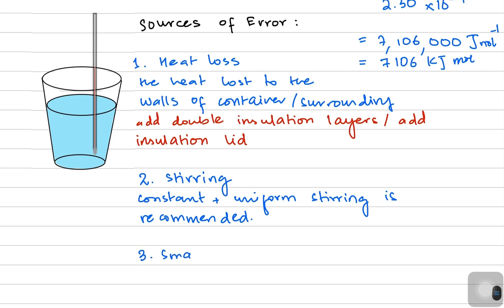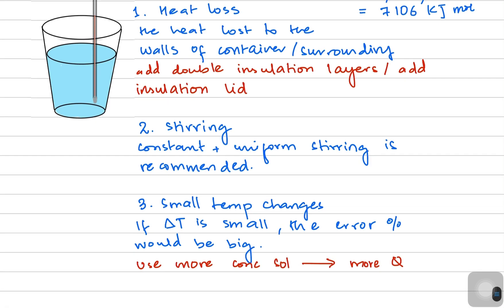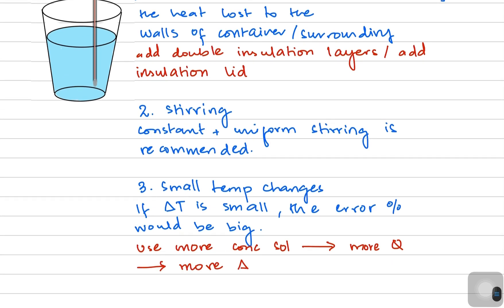The third source of error is very small temperature changes. If you are using very dilute acid, the temperature change won't be very big, and if the temperature change is small, the percentage error would be really large. To avoid this, use more concentrated acid and alkali so that more heat is released, a bigger temperature change is observed, and ultimately smaller percentage errors are expected.